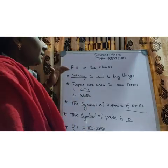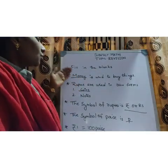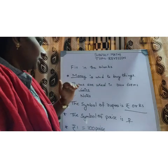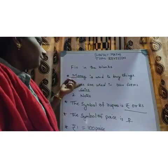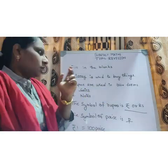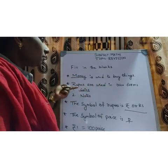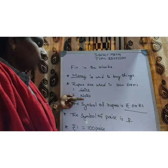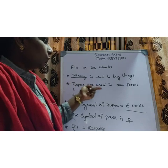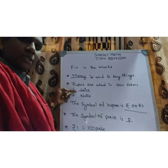First, fill in the blanks. Dash is used to buy things — yes, with the help of money. Money is used to buy things. So the money is in two forms. Rupees are used in how many forms? Two forms. So first is coins and notes. Rupees are used in two forms, that is coins and notes.